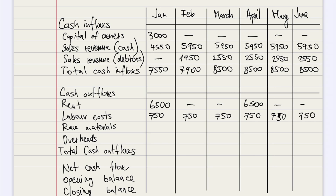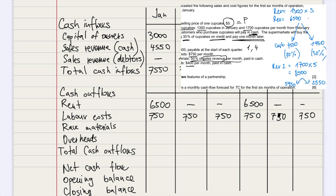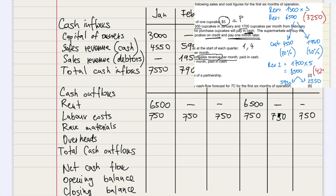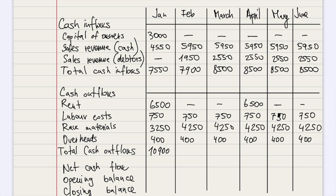Raw materials is always going to be 50% of the sales revenue. So as you can see, for January the revenue is going to be $6,500, and for February it's going to be $8,500, and the same for the months continuing. We insert that into the cash flow forecast, then insert the overheads and the total cash outflows.